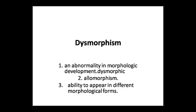There is a word called allomorphism, which refers to the ability to appear in different morphological forms. Whether it is dysmorphism or allomorphism, these are different concepts. An abnormality in morphological development is dysmorphism.